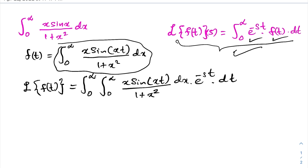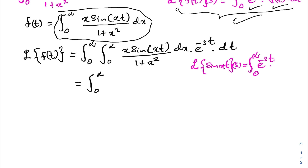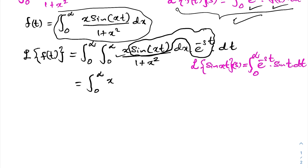Now I am going to take the Laplace transform of sine of xt. We know the Laplace transform of sine of xt can be represented as the integral from zero to infinity of e to the minus st times sine of xt dt. So we have x times e to the minus st times sine of xt dt.